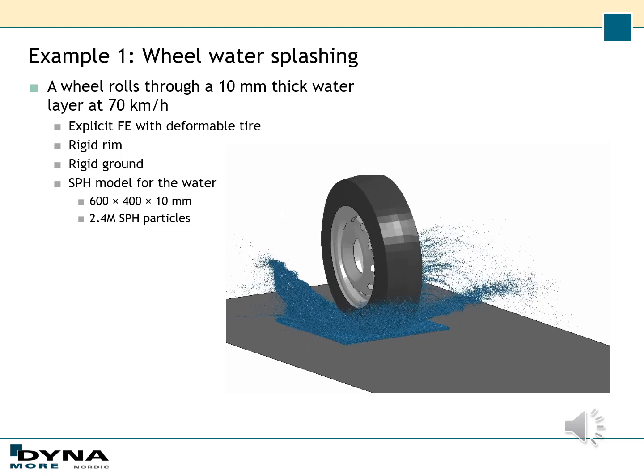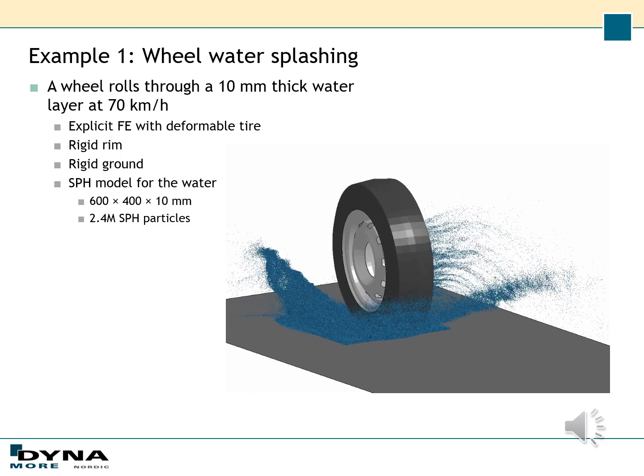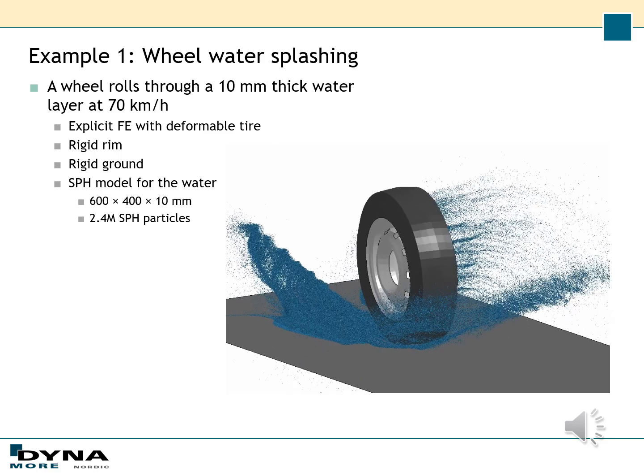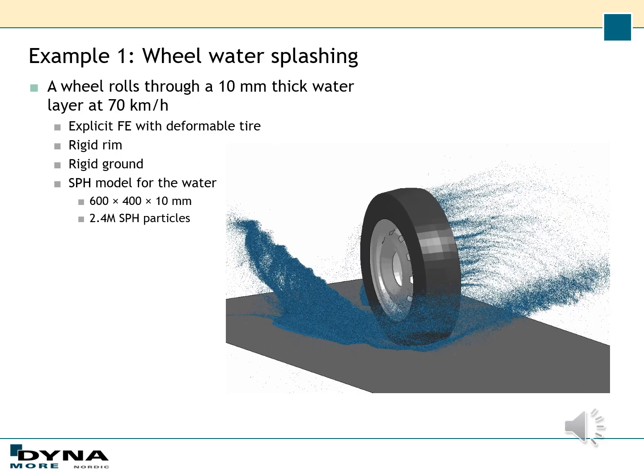The first example is a wheel rolling through a 10 mm thick water layer at 70 km per hour. I used an explicit finite element model for the tire with a rigid rim and rigid ground. For the water I used 2.4 million SPH particles. You can see the splashing of the water in the movie here.